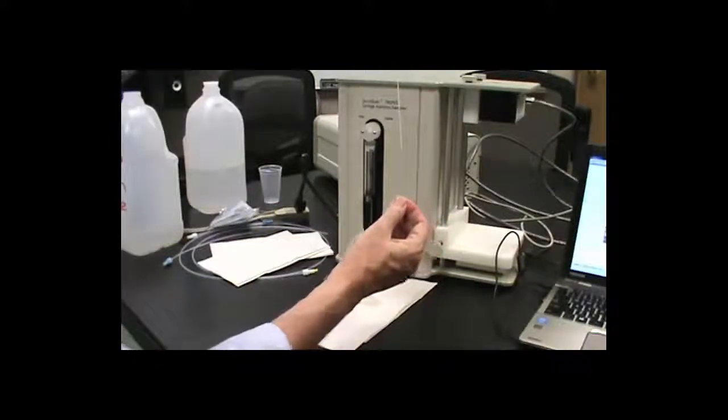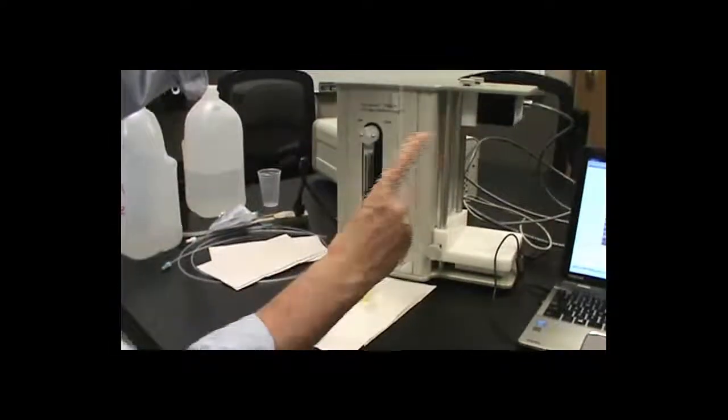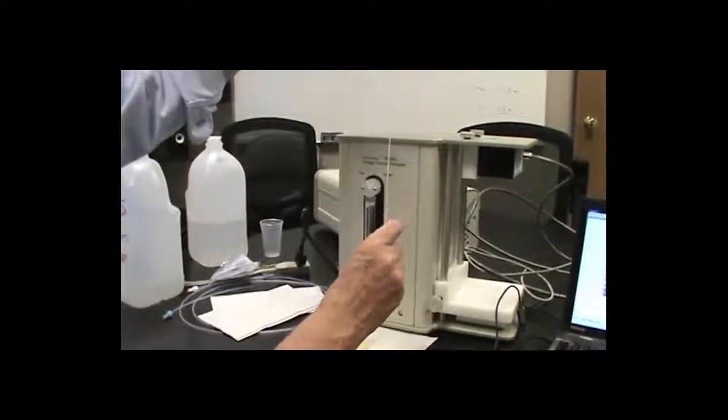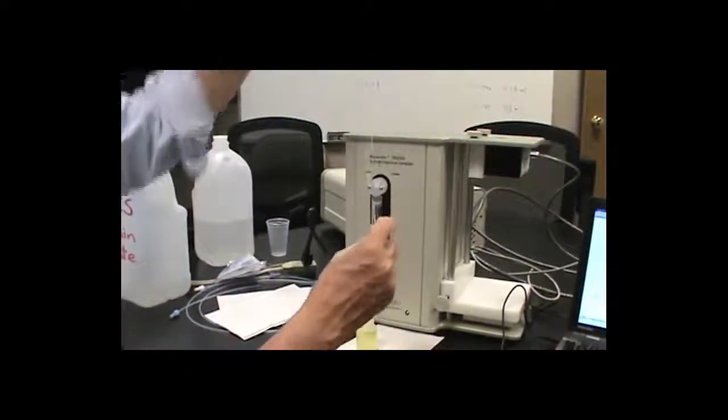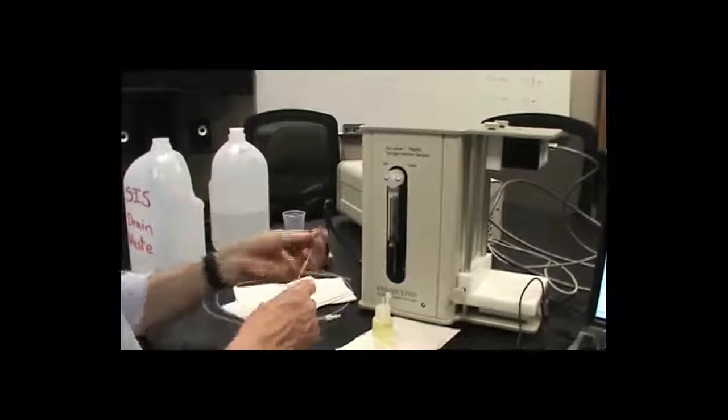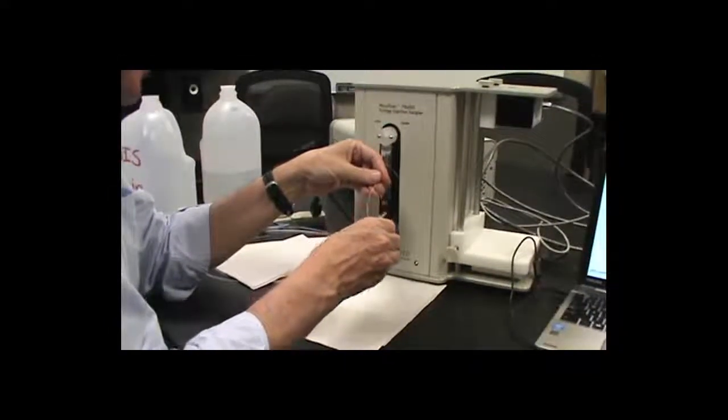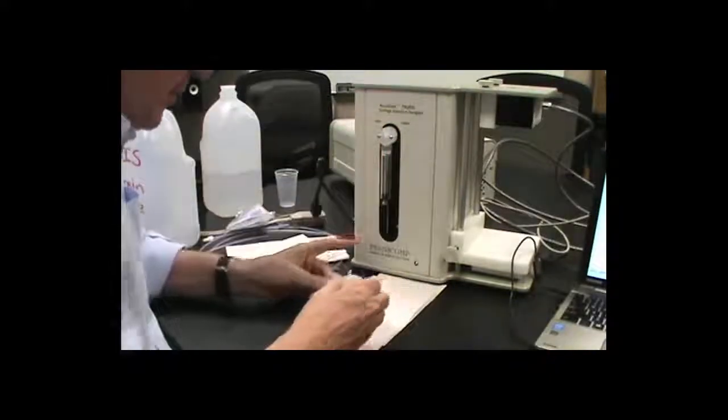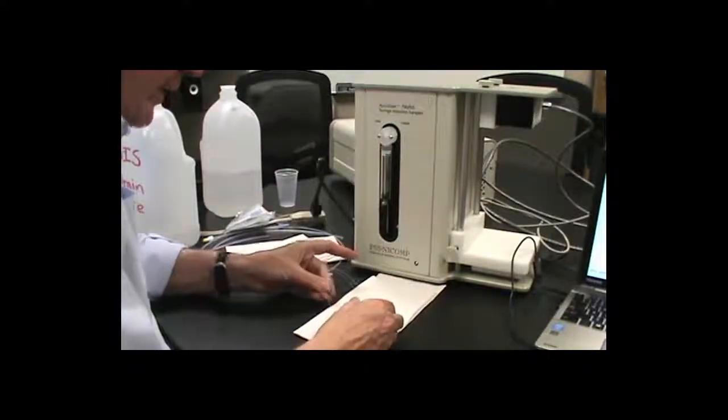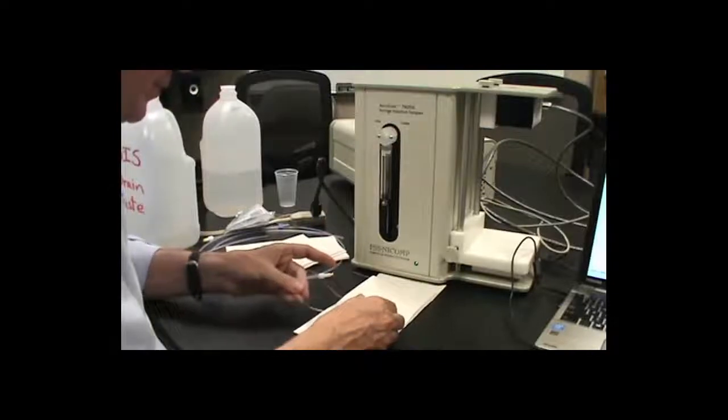You'll see that it is asymmetric. Down here at this end, it is thicker. What I'm going to do is wet that part of the cleaning cloth. This bottle comes with your system. This is the cleaning fluid, and I'm just going to wet that with the cleaning solution.